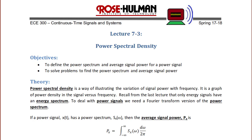Power spectral density is a way of illustrating the variation of signal power with frequency. It's connected to our last lecture where we looked at variations in energy with respect to frequency. It is a graph of power density in the signal versus frequency. Recall from the last lecture that only energy signals have an energy spectrum, so to deal with power signals, we need a Fourier transform version of the power spectrum.